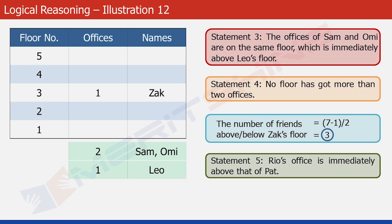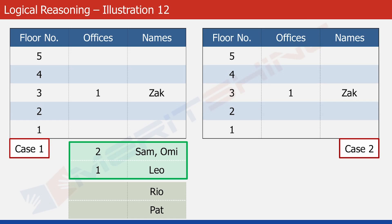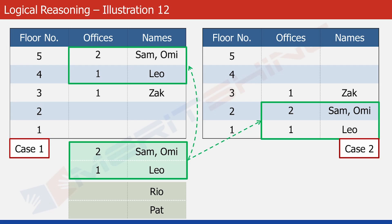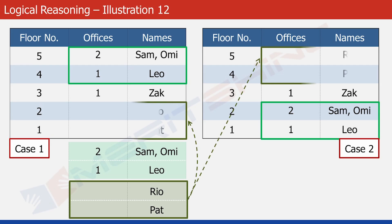Let's look at statement 5 now. It says that Rio's office is immediately above that of Pat. This Sam/Omi/Leo block spans two floors with three offices and can be placed at two positions in the table: either at floor numbers 4 and 5, or at floor numbers 1 and 2. So we divide into two cases. In case 1, Sam and Omi are on floor 5 and Leo on floor 4. In case 2, Sam and Omi are on floor 2 and Leo on floor 1. For Rio and Pat: in case 1, Rio is on floor 2 and Pat on floor 1; in case 2, Rio on floor 5 and Pat on floor 4.